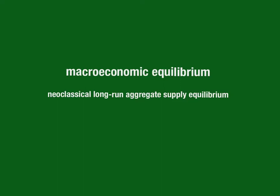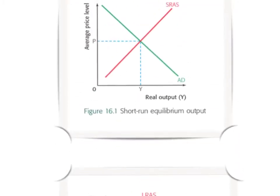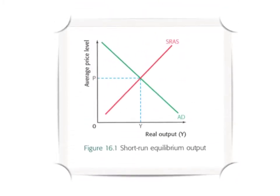Economists distinguish between a short-run and a long-run aggregate supply curve, and therefore we'll have two different equilibriums — one in the short run and one in the long run. It's useful to quickly look at the short-run equilibrium, where the economy is in equilibrium where aggregate demand equals the short-run aggregate supply curve. Here is the short-run aggregate supply curve, here is the intersection with the aggregate demand curve, and in the short run the economy is working at a price level P and an output level of Y.